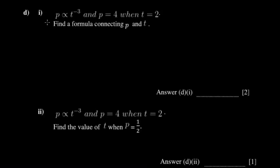The next question is on variation. We have p directly proportional - I say directly proportional because it's simply a term with no fraction involved. You'll also see that this is the same as saying t is inversely proportional to t cubed. But you're given p is directly proportional to t to the power negative 3, and asked to find the formula. You write your expression, then introduce a constant k, so it becomes p = k times t to the power negative 3.